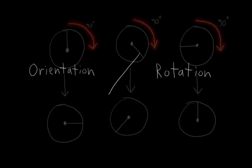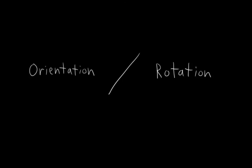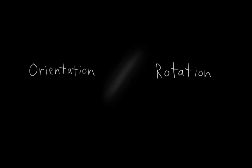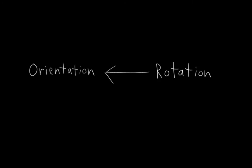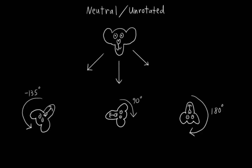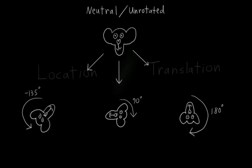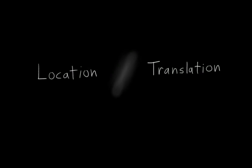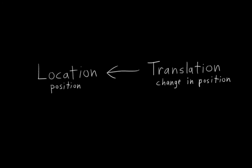In computer animation, this distinction between orientation and rotation often gets blurred. And that's because we typically use rotation to specify orientation. We have a neutral starting orientation that we consider unrotated, and then we specify other orientations by applying different rotations to it. Incidentally, it's actually the same with location and translation. Location is just a position. Translation is a change in position. But we specify locations using translations.